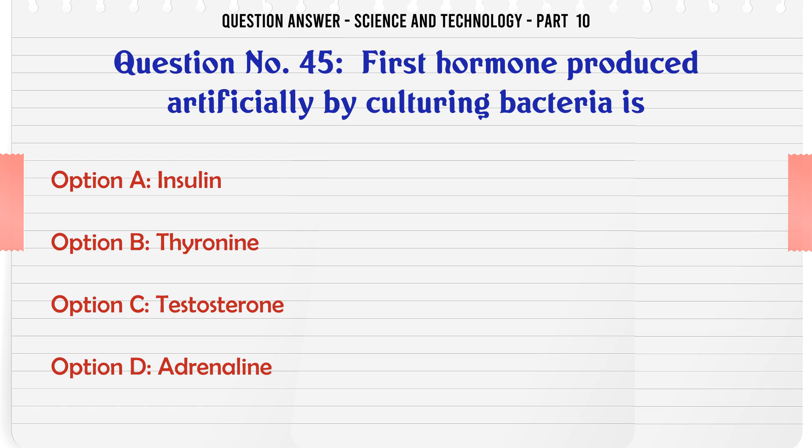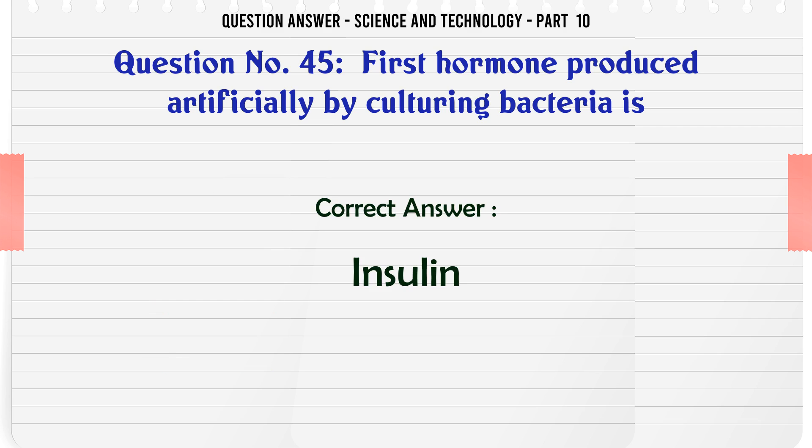First hormone produced artificially by culturing bacteria is. A. Insulin. B. Thyroxine. C. Testosterone. D. Adrenaline. The correct answer is Insulin.